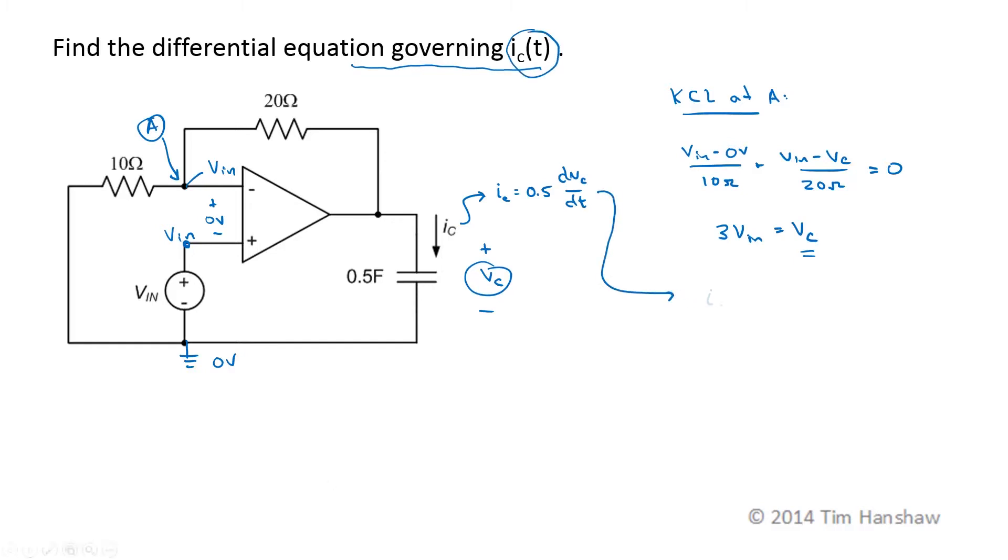Well, that's where this shows up. I sub C is 0.5 DVC by DT, which is 0.5 times the derivative with respect to time of V sub C, which is just 3VN. So I sub C is 0.5 times 3 is 1.5 DVN by DT.